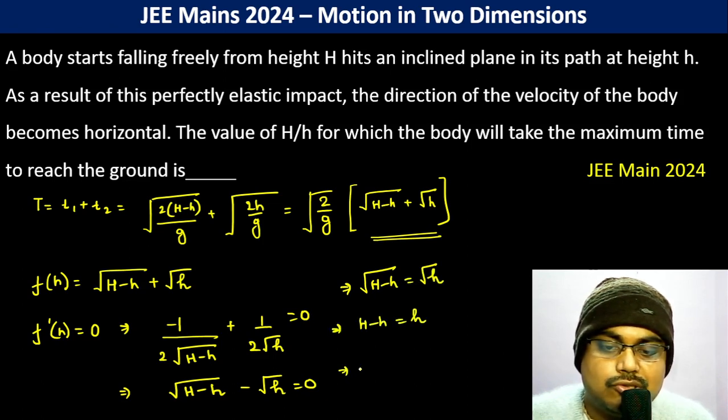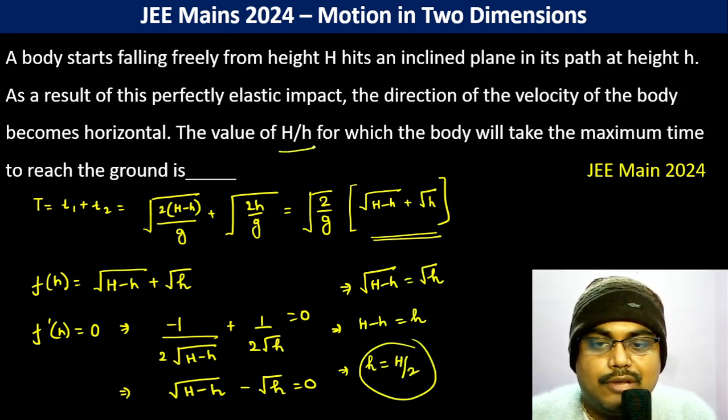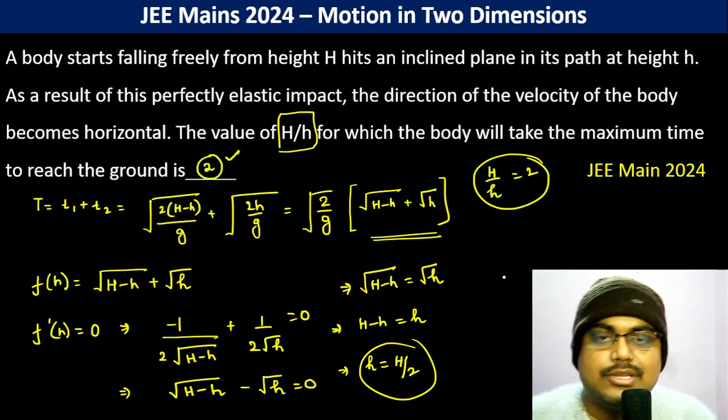That means root h minus h should be equal to root h. h minus h becomes h, so therefore h is H by 2. So the value of H by h becomes 2. That's the answer.